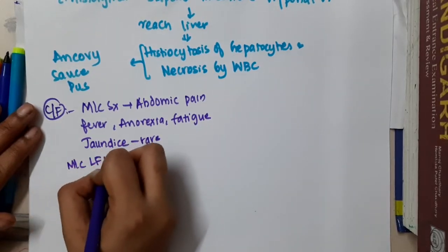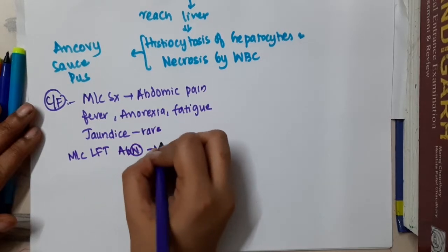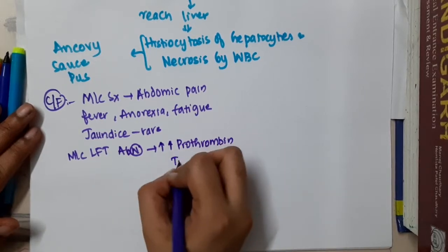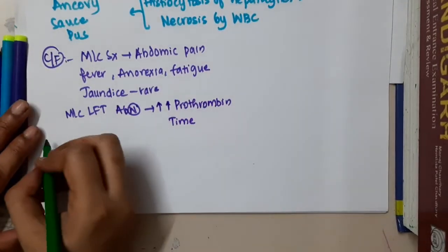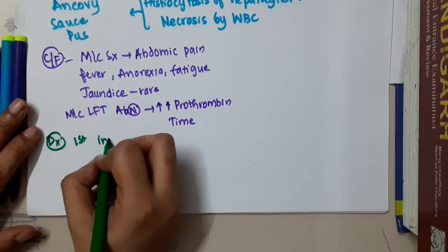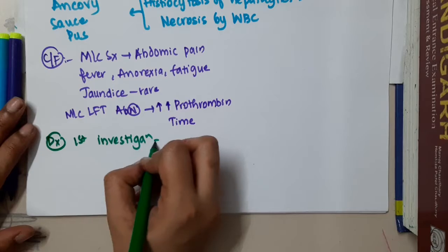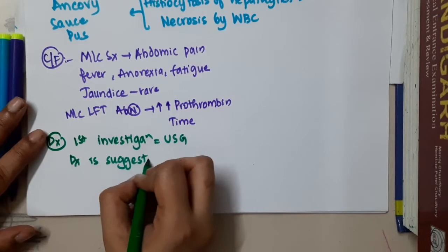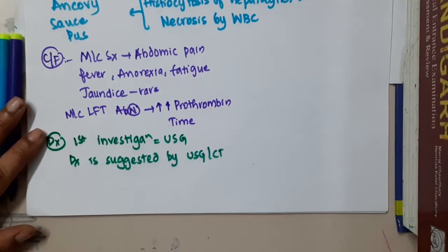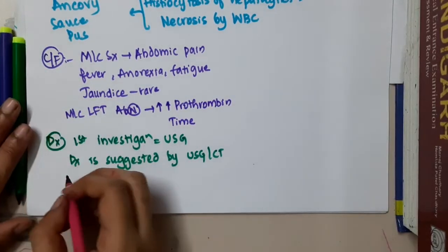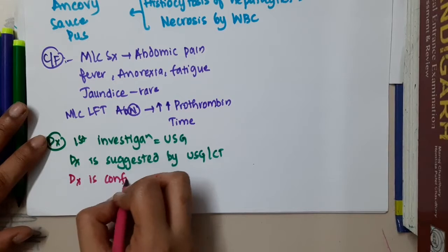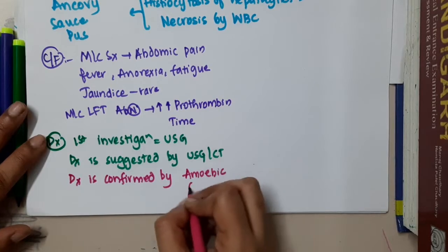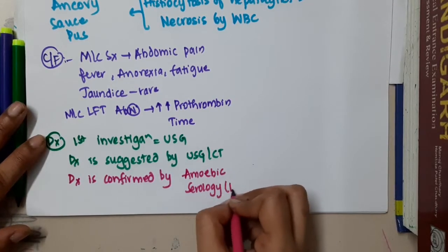The most common liver function test abnormality is an increase in prothrombin time. For diagnosis, USG is the first investigation done. The diagnosis is mainly suggested by ultrasonography or CT scan, and it is confirmed by amoebic serology and ELISA.